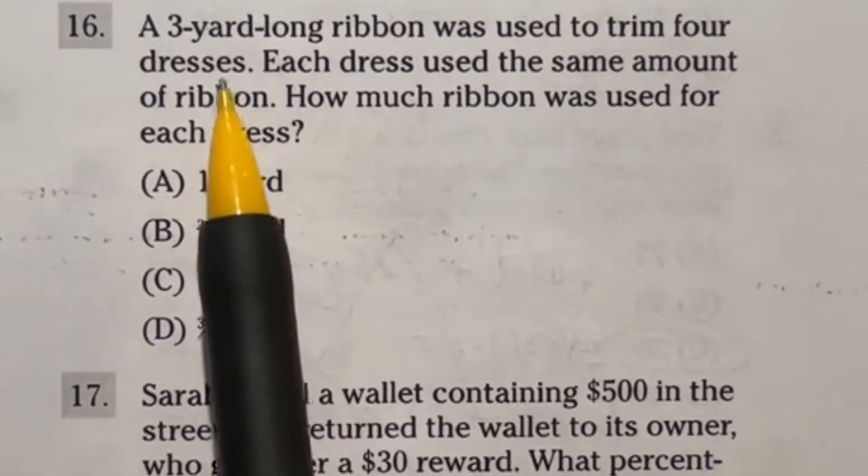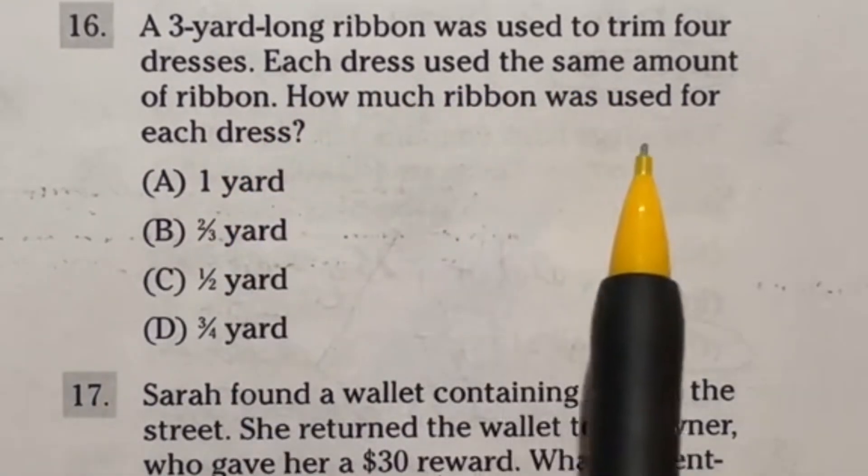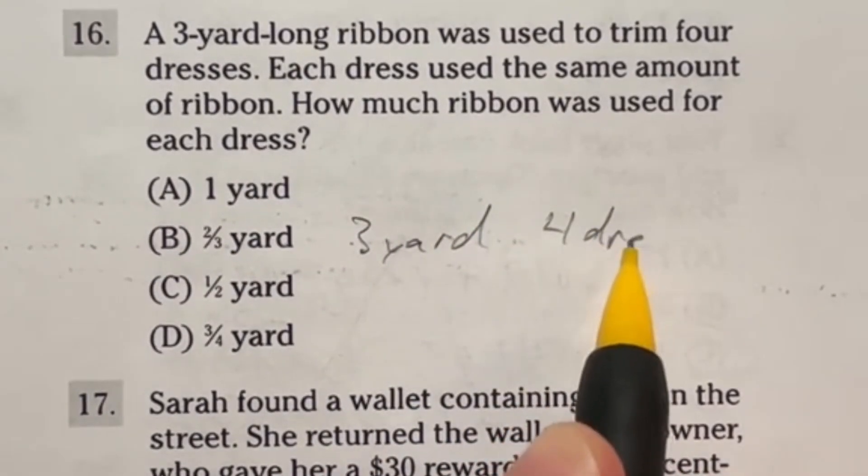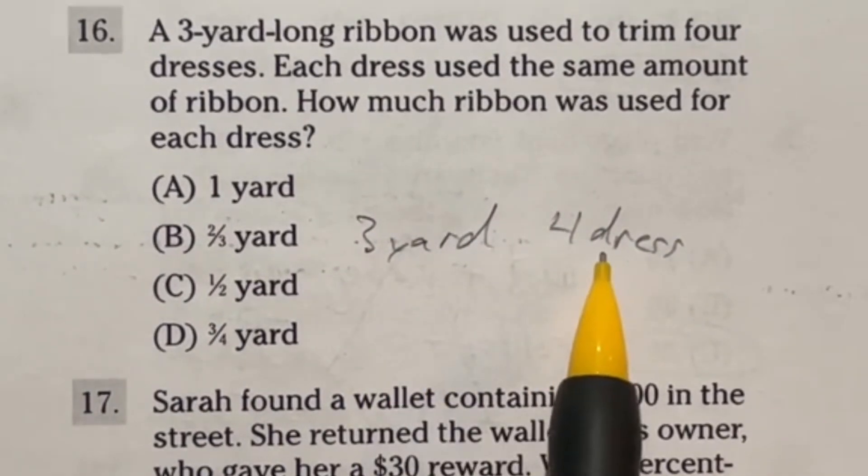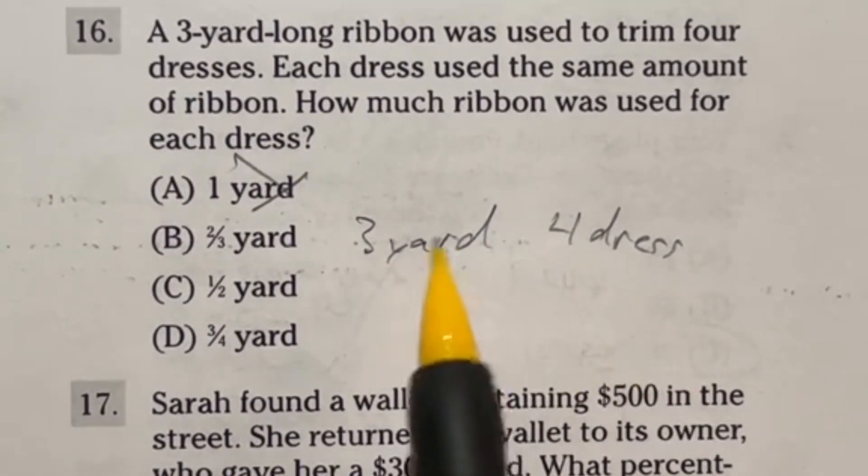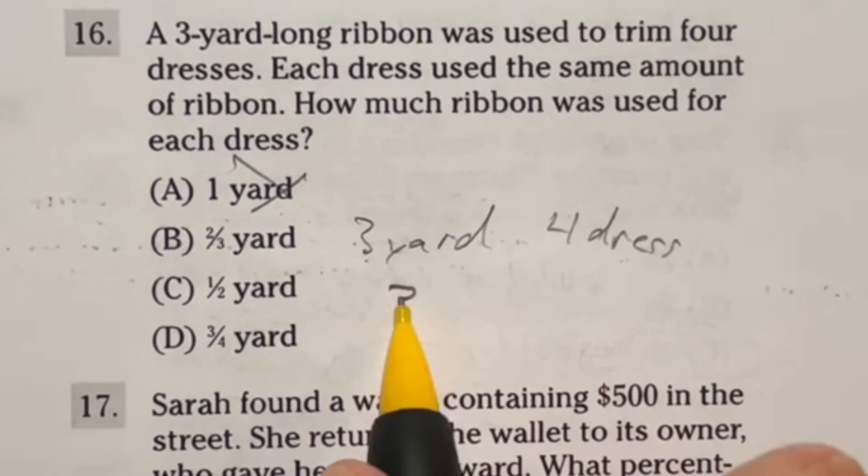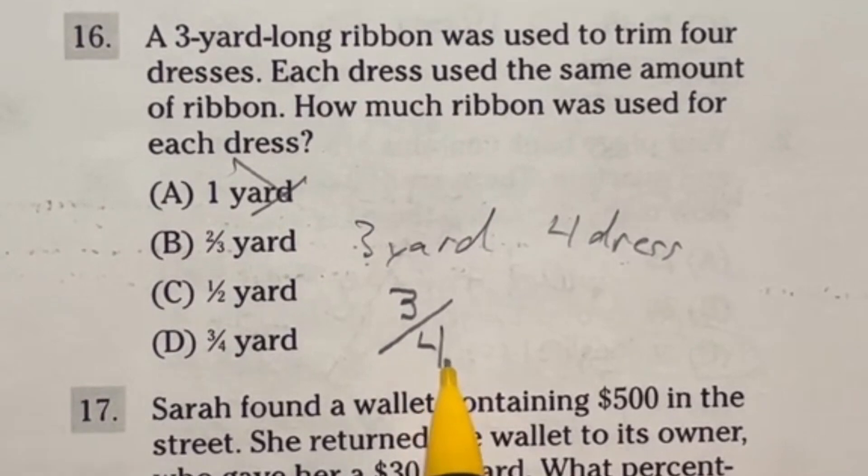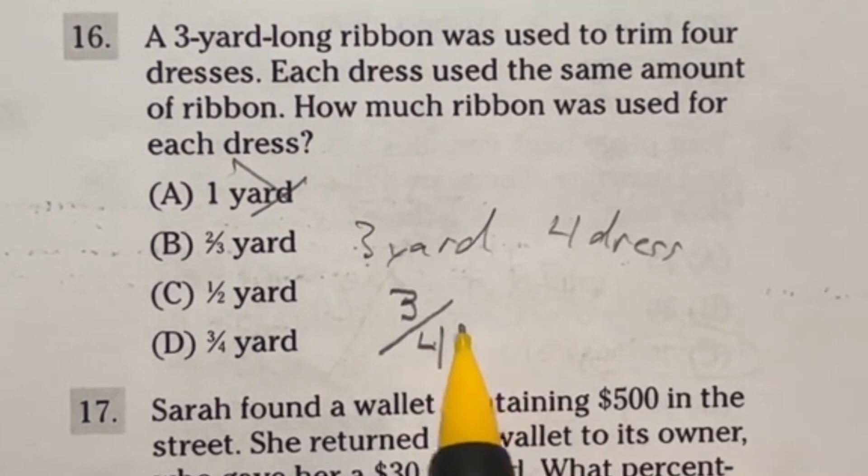Let's talk through number 16. It says a 3-yard-long ribbon was used to trim four dresses. Each dress used the same amount of ribbon. How much ribbon was used for each dress? So here's the problem. We have 3 yards, but we have 4 dresses. Now, knowing this, I can tell you right off the bat that 3 yards for 4 dresses means that each of these dresses is going to get less than a whole yard. So A is off right away because there's less yards than there are dresses. Now, how can we split this 3 amongst the 4 dresses? Well, essentially we are taking 3 yards and dividing those into 4 different dresses. So that means that each dress is going to end up getting 3 over 4 yards, which looks like answer D.